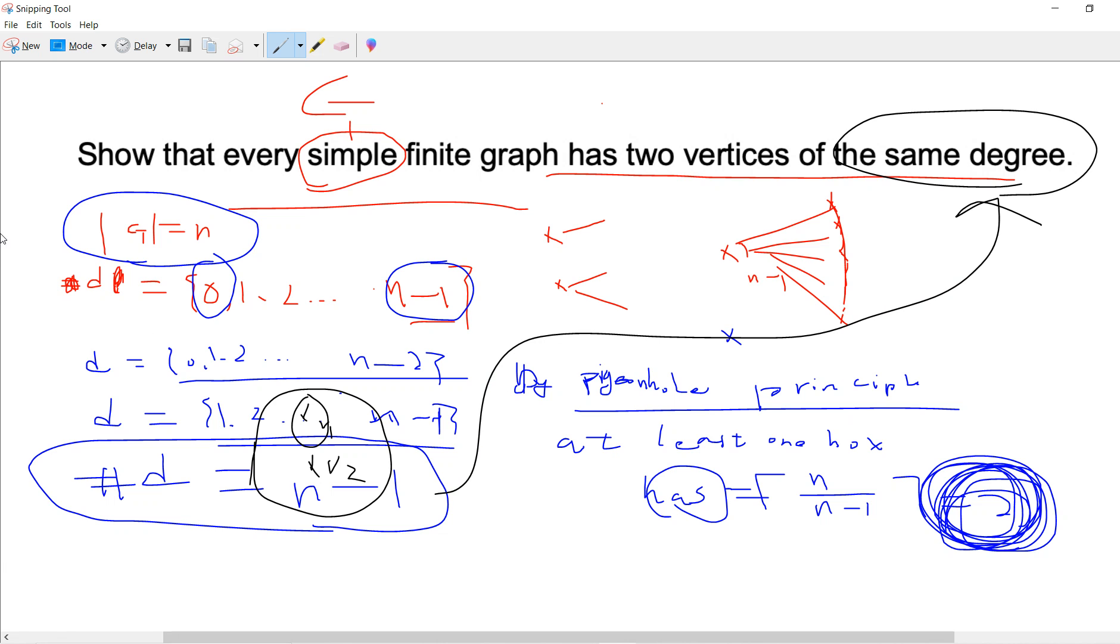So let's recall. At the beginning, we assume that the graph has n vertices and the number of possible degrees range from 0 to n minus 1. Then we find that actually the number of the possible degrees is always n minus 1. Then by the pigeonhole principle, we know that at least two vertices have the same degree. Okay, that's it. I will see you guys in other interesting graph videos.